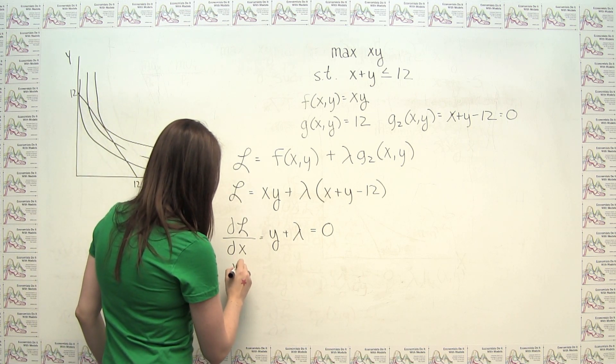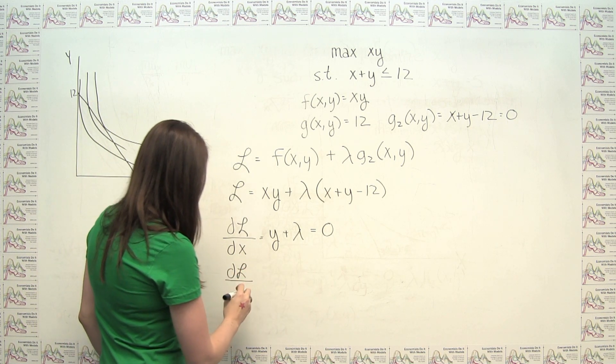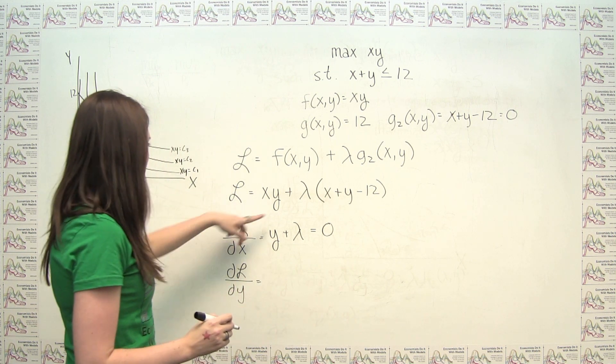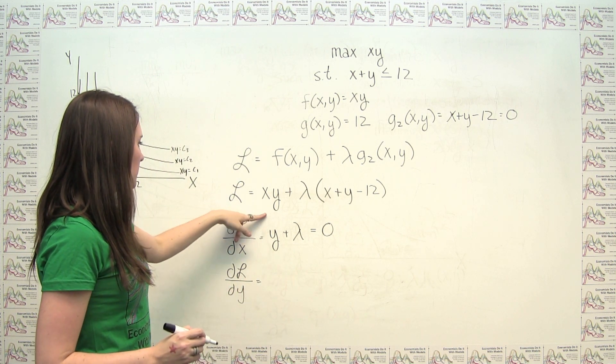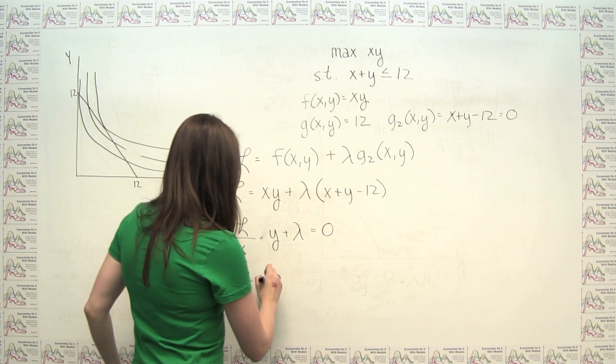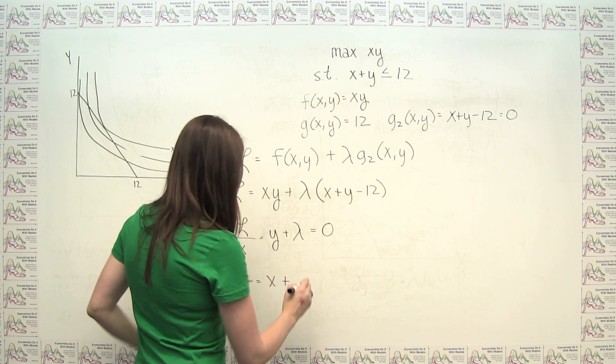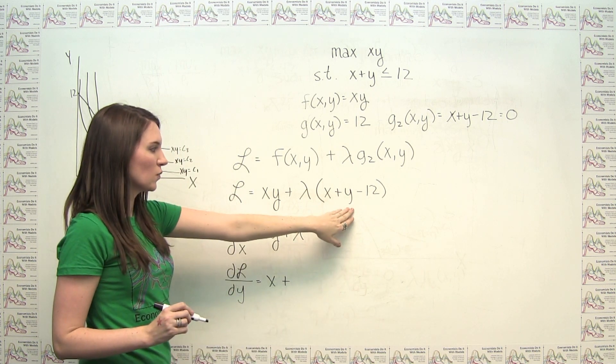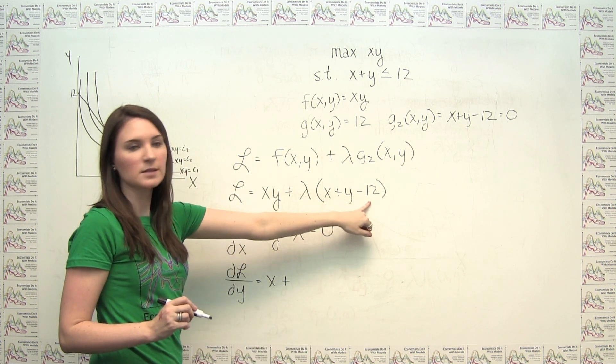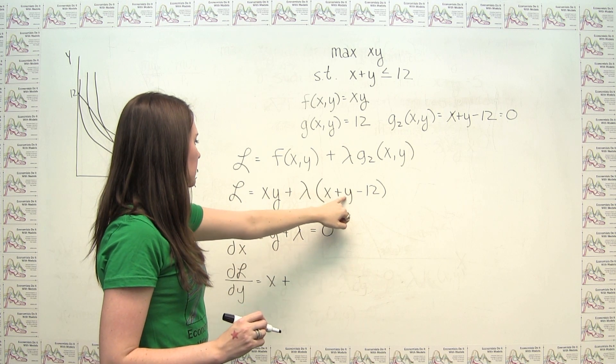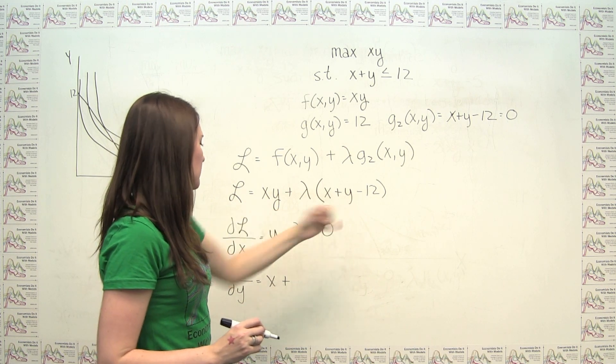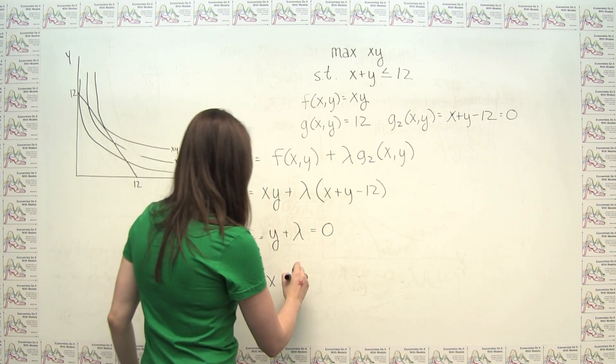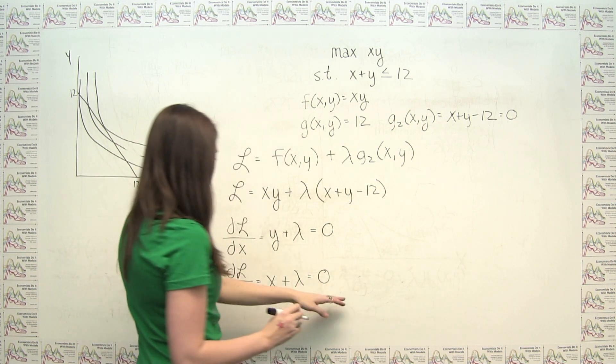Similarly, the partial of our Lagrangian with respect to y has to equal zero. And again, the derivative of this with respect to y is just x plus, well now the only thing that we're concerned about is this y, so the x and the 12 are constant. And the only thing multiplying the y is a lambda, so the derivative of this part with respect to y is just going to be lambda. And that also has to equal zero.